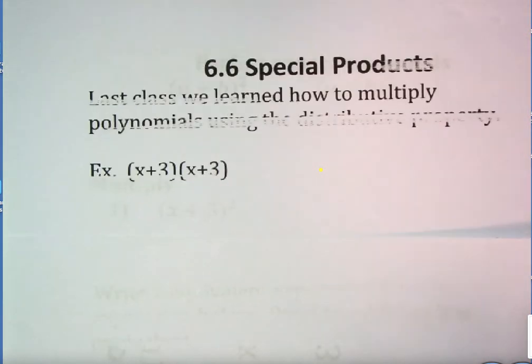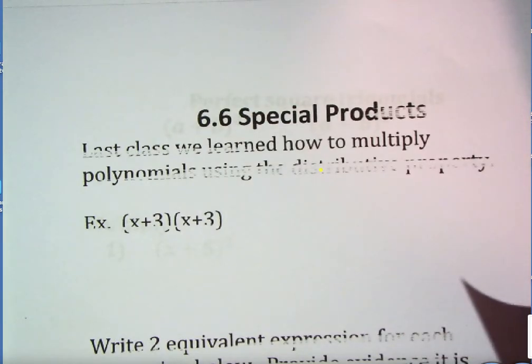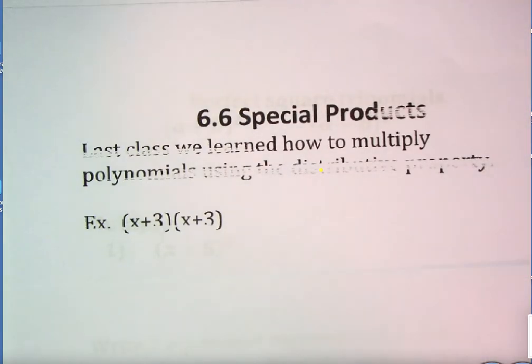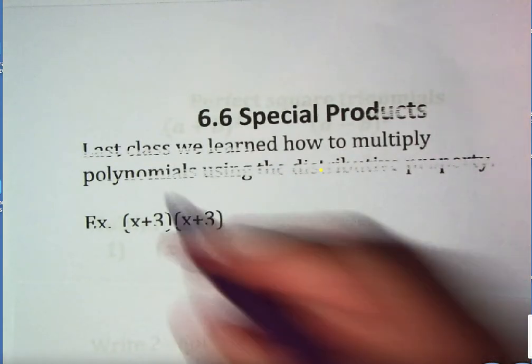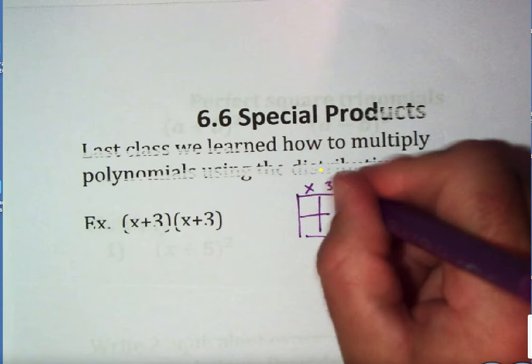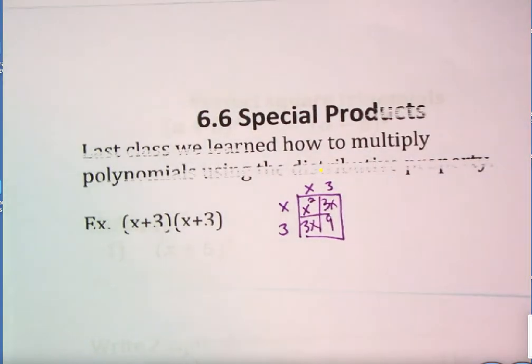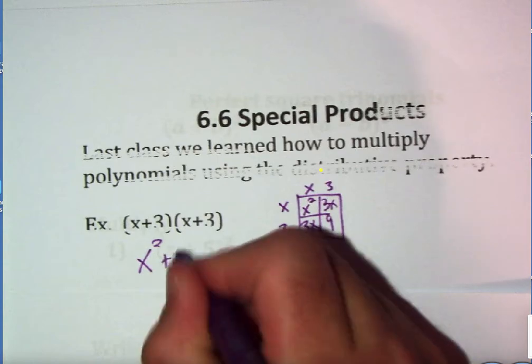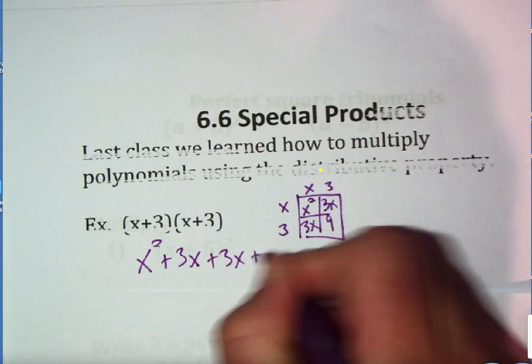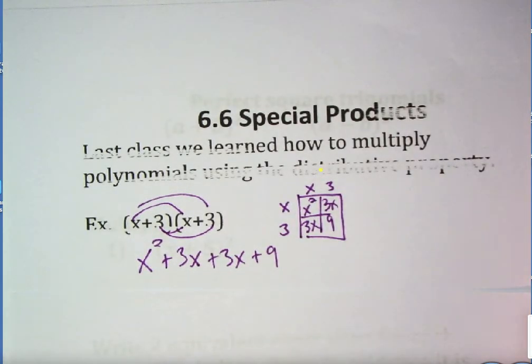This is 6.6, adding to our notes. Last class we learned how to multiply polynomials using the distributive property. For example, we learned that we can multiply x plus 3 times x plus 3 a couple different ways. I introduced you to the area model, which you just saw. You take one parenthesis and put it on the top, one parenthesis put it on the side, and you just find the areas. If we add any like terms, we get x squared plus 3x plus 3x plus 9. We get four products. You can get the same by distributing. But I like the area model. It's a nice way to show the math.